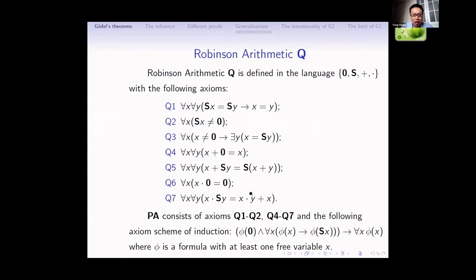Now I will talk about the modern version of Gödel's incompleteness theorems. The modern version can be formulated over some weaker system than P. Here is the famous Robinson arithmetic Q. This system is well known, so I'm going to skip the details. PA consists of axioms Q1 through Q4 plus Q7, and this induction scheme.